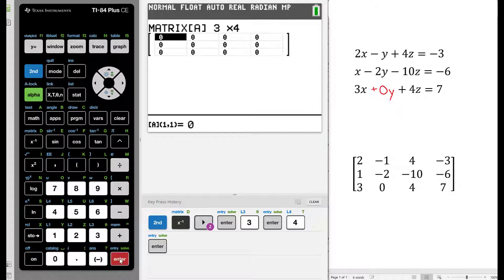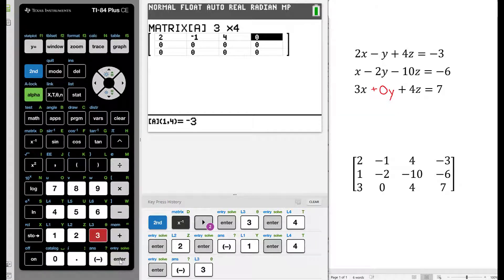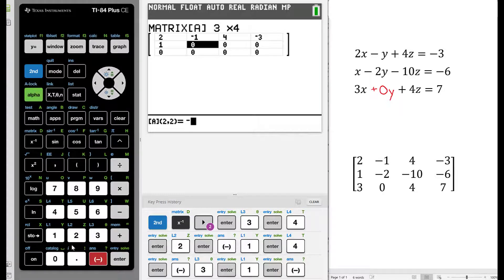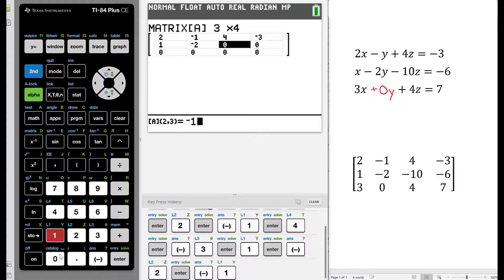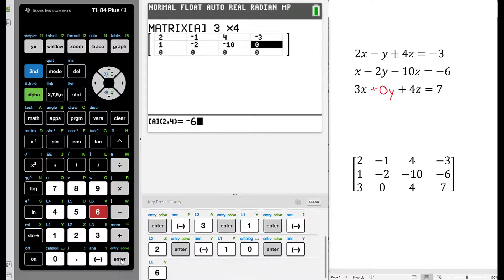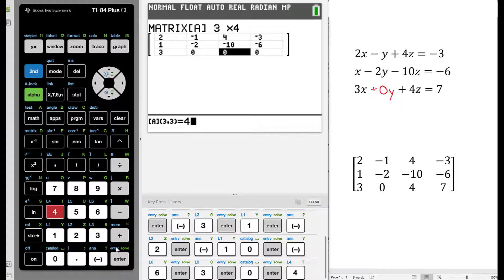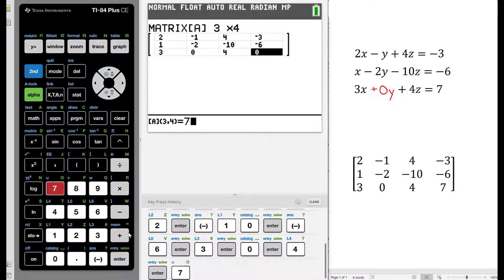We will now input all of the entries. So in row 1, from left to right, we had 2, negative 1, 4, negative 3. In row 2, we had 1, negative 2, negative 10, and negative 6. In row 3, we had 3, 0, 4, and 7.